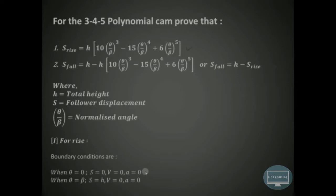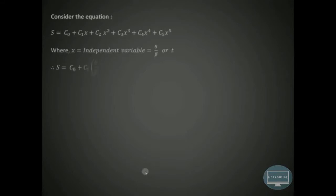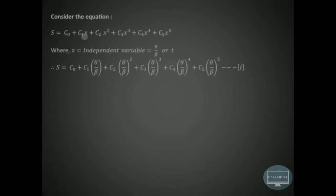At this particular position, velocity will be 0 and acceleration is also 0, meaning the follower has reached its maximum height. Now let us consider the polynomial equation: S is equal to C0 plus C1·x plus C2·x² plus C3·x³ plus C4·x⁴ plus C5·x⁵. We assume the independent variable X equals theta upon beta.